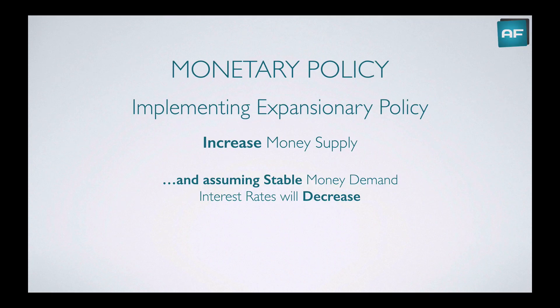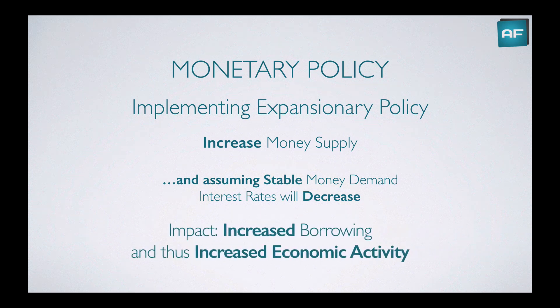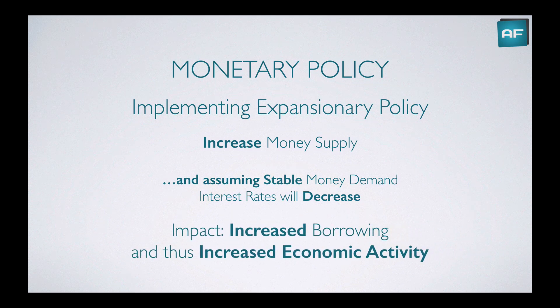So how do we implement expansionary monetary policy? We need to increase the money supply. Assuming stable money demand, interest rates will decrease. When interest rates decrease, borrowing and expenditure become more attractive, and this should increase economic activity. The impact is increased borrowing and, as a result, increased economic activity.